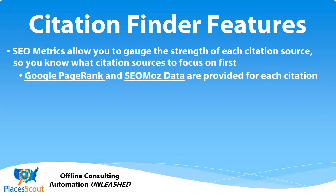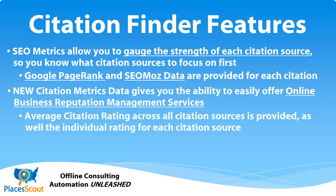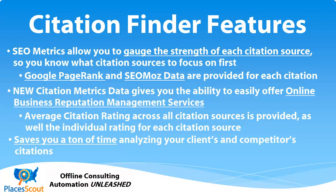It provides the Google PageRank and the SEO Moz competition data for each citation source, so you can gauge the strength of each citation source. One of the most powerful features of PlacesScout Citation Finder is the new citation metrics data provided in the individual view. This data allows you to easily offer online business reputation management services. It provides average citation ratings across all the citation sources found for the business, and it also gives you the individual rating of each citation source. These sources are hyperlinked so you can easily read all the reviews and leave reviews for your business as well.